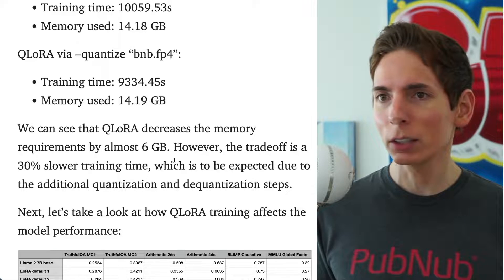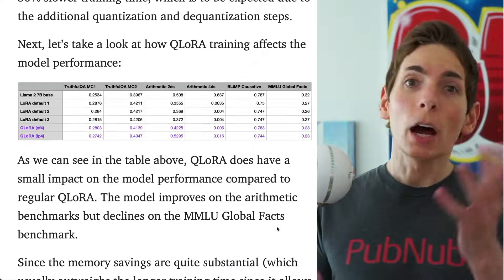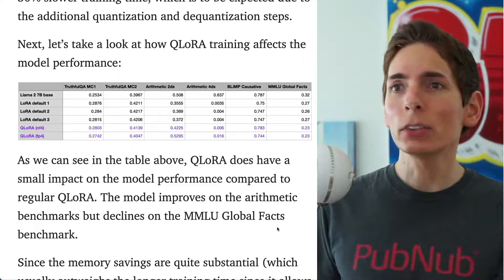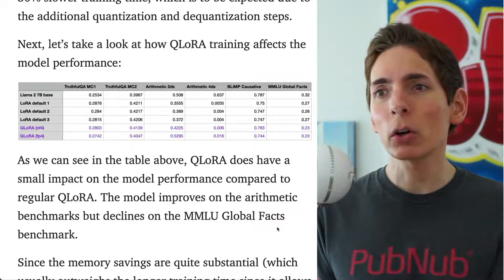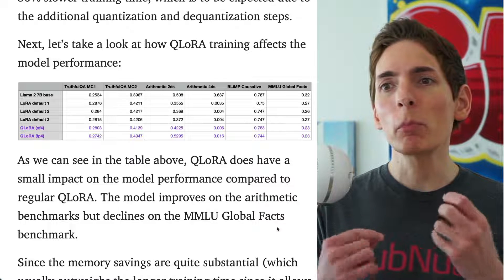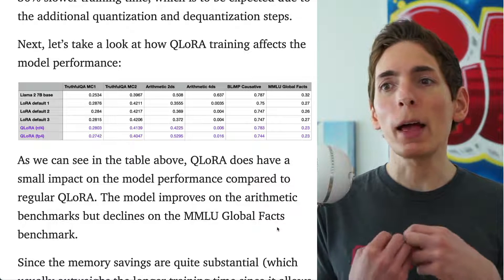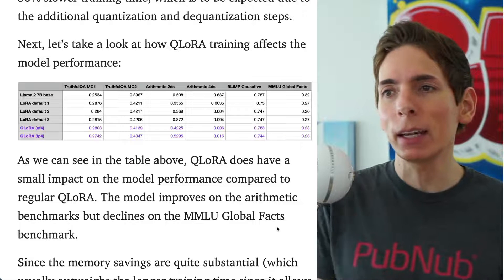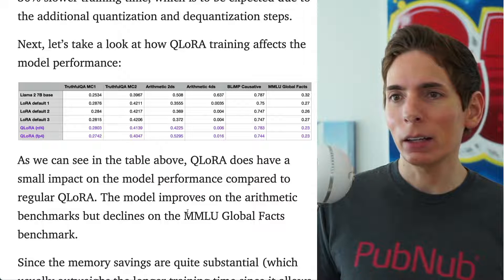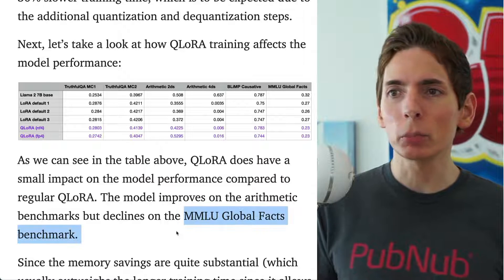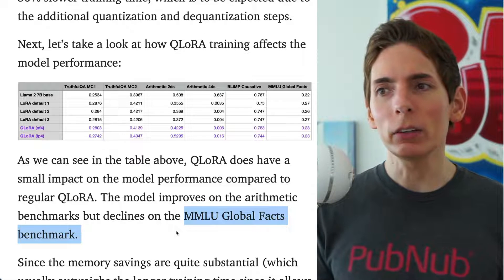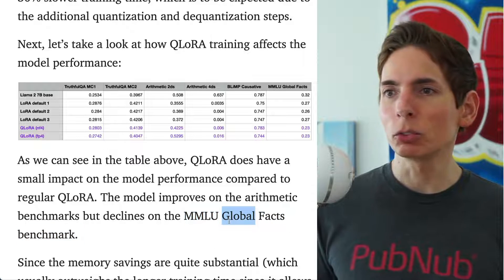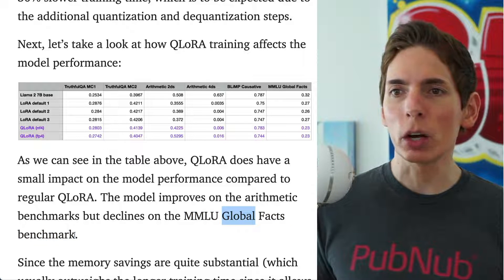Another trade-off of quantizing is that the model essentially forgets things — it performs a little bit less well on some general knowledge tasks.